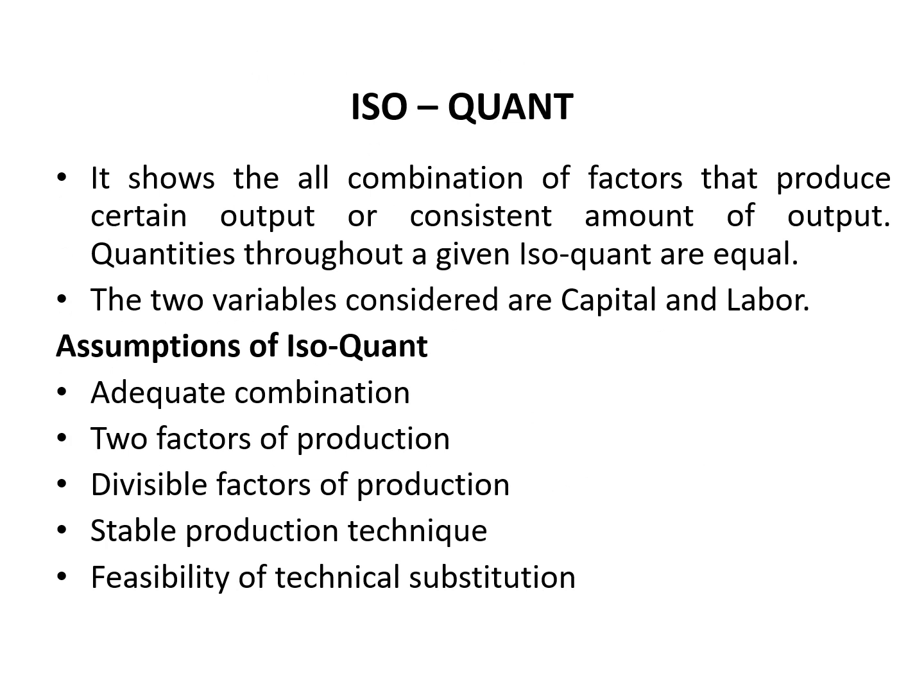Isoquant is also known as the product indifference curve or isoproduct curve. The term 'iso' means same, and 'quantity' or 'product' means quantity produced. An isoquant curve is a geometric representation of the production function where different combinations of labor and capital are employed to get the same level of output. Isoquant curve shows all possible combinations of input factors that yield the same quantity of production. The slope of the isoquant curve is called the rate of technical substitution, which explains how much capital must be substituted for labor to give the same quantity of production if labor is reduced by one unit.